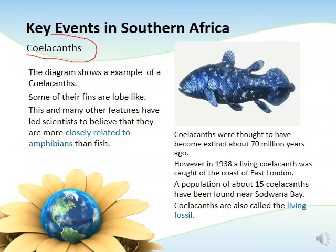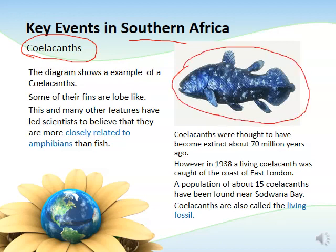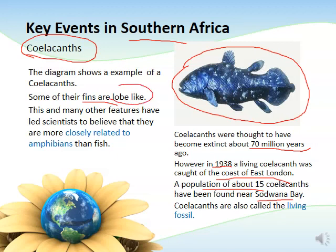The coelacanth, a species previously thought to be extinct, forms another key fossil evidence found in southern Africa. They were thought to have gone extinct about 70 million years ago until rediscovered in 1938. One was caught around the coast of East London, and a population of about 15 coelacanths has been found near Sodwana Bay. The coelacanth has lobe-like fins and other characteristic features.